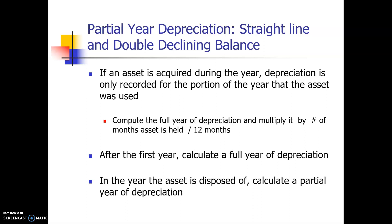To take a partial year of depreciation, we compute a full year of depreciation and multiply it by a fraction: the number of months that you held the asset divided by 12. Then when you get to the second year, you can take a full year of depreciation — same for the third year, fourth year, however many years until you dispose of it. When you dispose of it, unless you waited until the last day of your fiscal year, you'll have a partial year in the last year too, using the same formula.